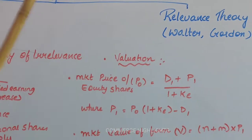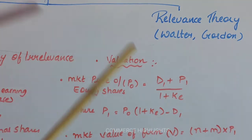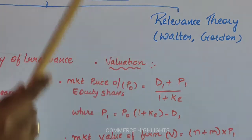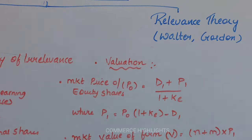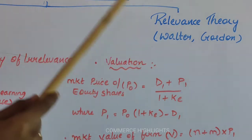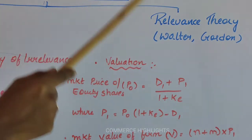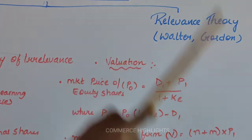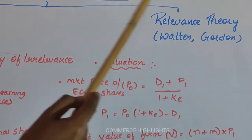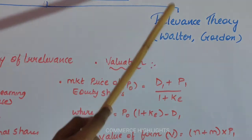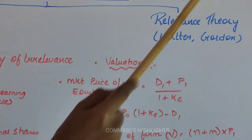Relevance theory says that dividend policy is relevant. That is, dividend policy affects the profitability of a firm, the value of the firm, and the shareholders' wealth. This theory also says that the value of the firm in the stock market generally fluctuates on the basis of dividend distribution. A firm which is paying more and more dividend is an indicator that the firm is running profitably. Walter and Gordon proposed that dividend policy is relevant for the success of the firm.